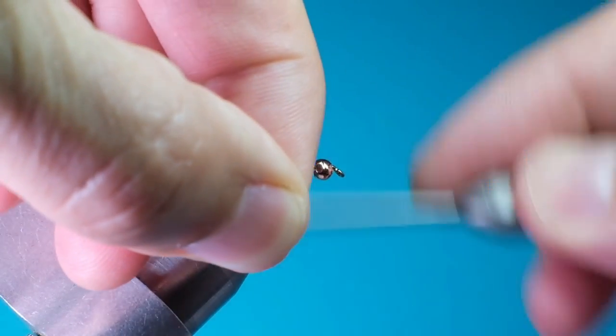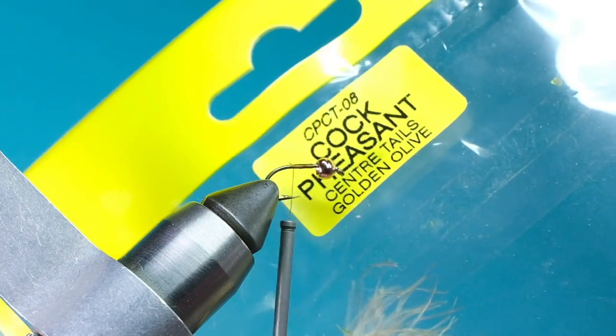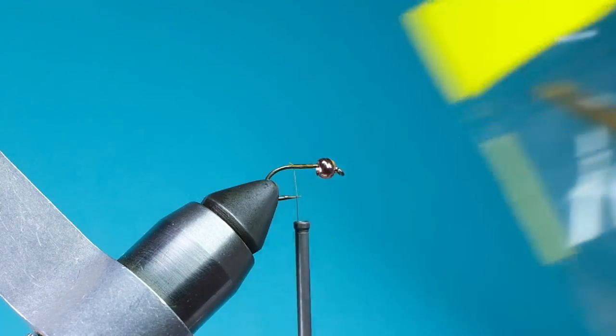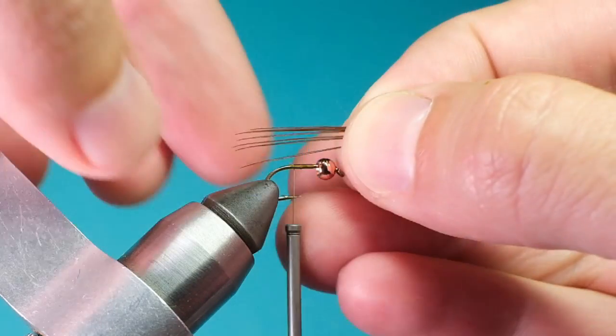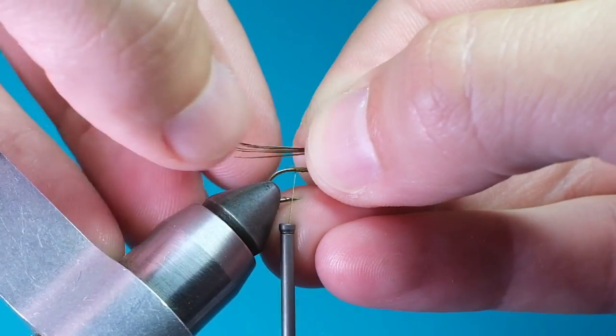Add your olive colored thread of choice to the hook and cut off its tag end. For the tail and body, we're going to use Pheasant Tail dyed in golden olive. Take about five or six fibers off the stem and measure them to be about the same length as the hook shank.